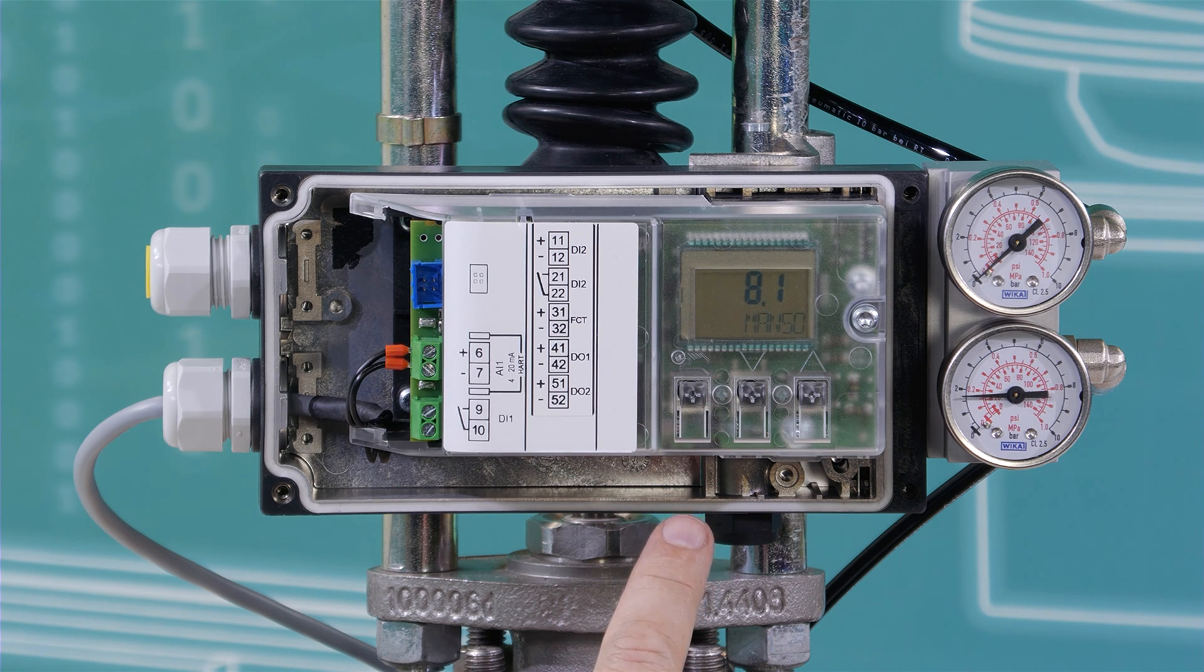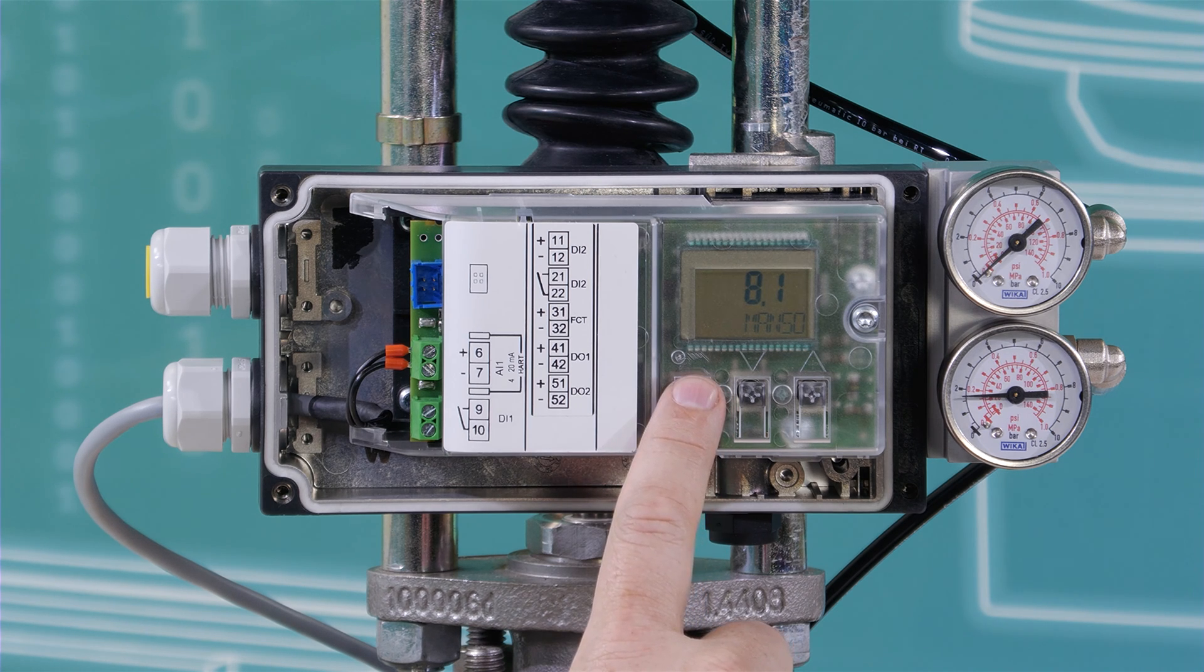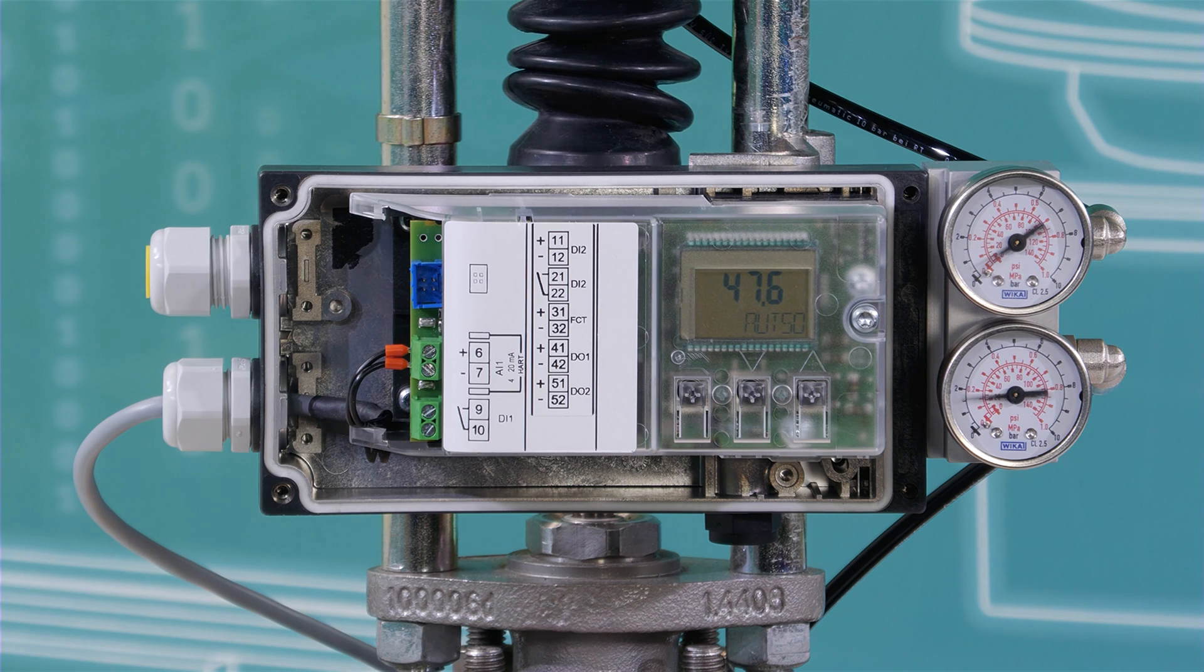At the end, you can change from manual mode to auto mode, also by using the hand button. That's it. If you have further questions, you can contact our Siemens support. Thank you for watching this video.